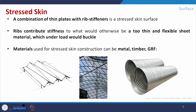Stress skin is a surface type related to folded plates — a combination of thin plates where ribs or corrugations increase stiffness of the material. It may be corrugated metal pipe or a membrane-type structure. Ribs contribute stiffness and the thin, flexible sheet performs better under applied load. Materials used for stress skin construction can be metal, timber, or GRF, and concrete can also be used if properly reinforced.